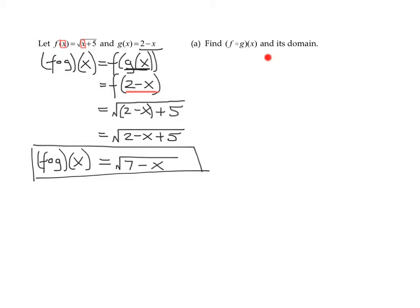Now I have to find its domain. To find the domain, we always have to look at what I call the unsimplified form and the simplified form of f composed with g, because sometimes in simplifying, some of the restrictions that might be in the unsimplified form disappear.